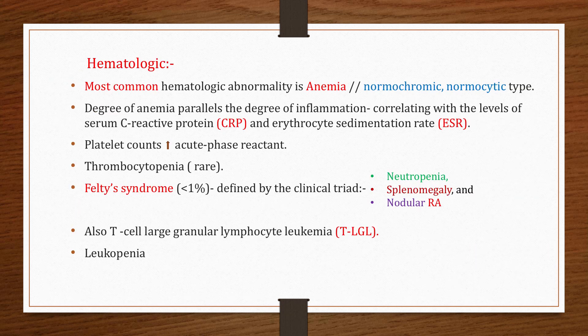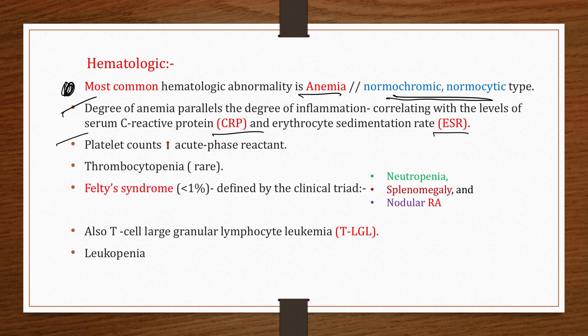The most common hematologic abnormality in RA is anemia, which is normochromic normocytic type. The degree of anemia parallels the degree of inflammation and correlates with serum CRP and ESR levels. There is also elevation in platelet counts, as platelets are acute phase reactants that increase in response to systemic infections, inflammatory conditions, bleeding, and tumors. Thrombocytopenia is rare.